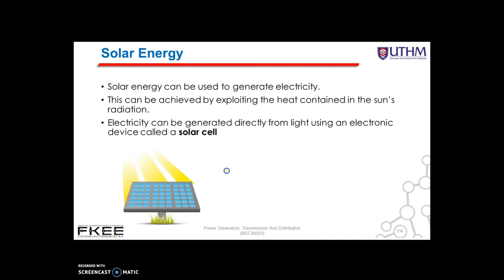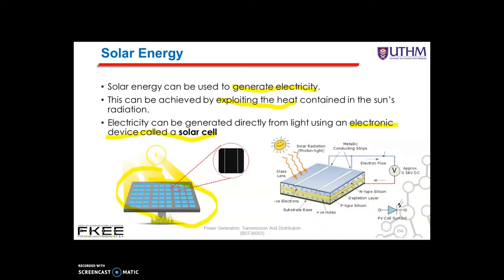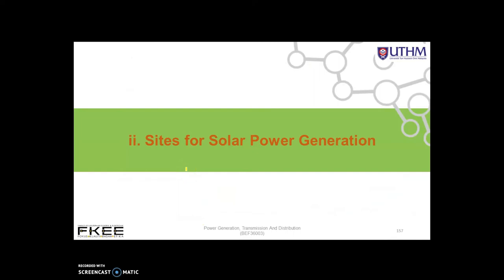Solar energy can be used to generate electricity. This can be achieved by exploiting the heat contained in the sun's radiation. Electricity can also be generated directly from light using an electronic device called a solar cell, or photovoltaic cell. By using this solar cell, electricity can be produced from solar energy.